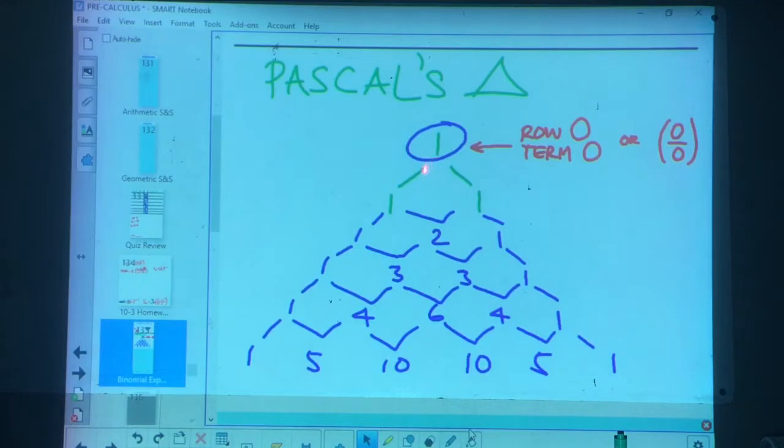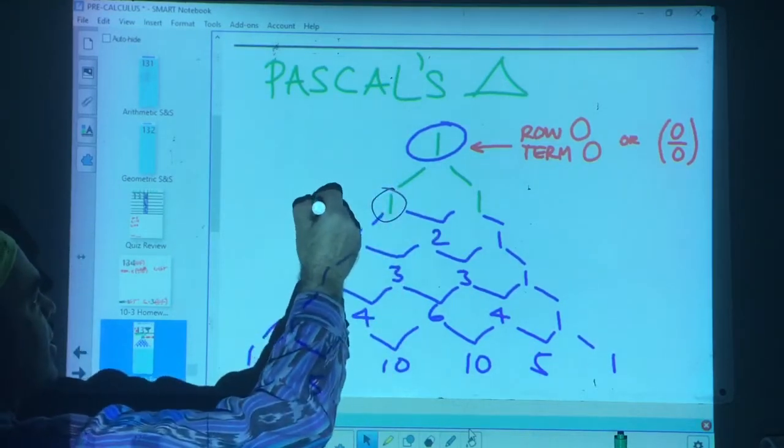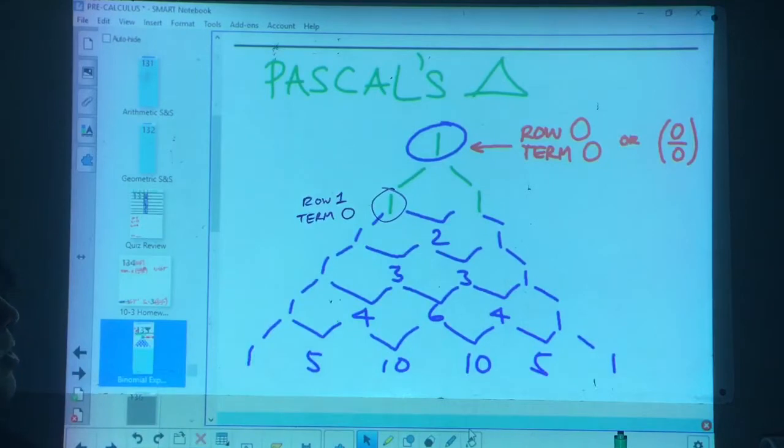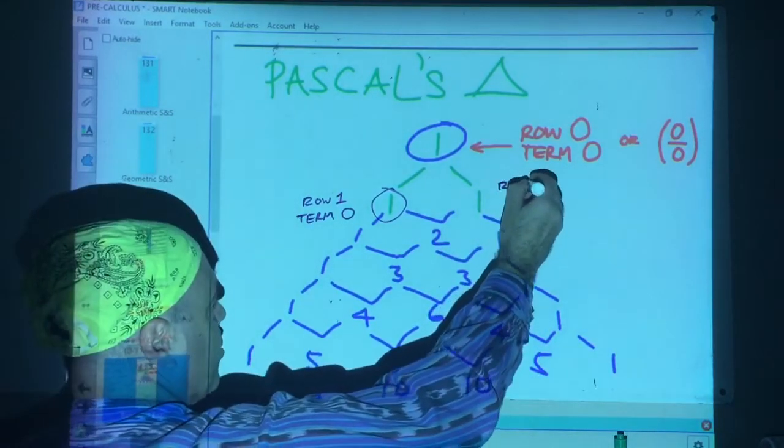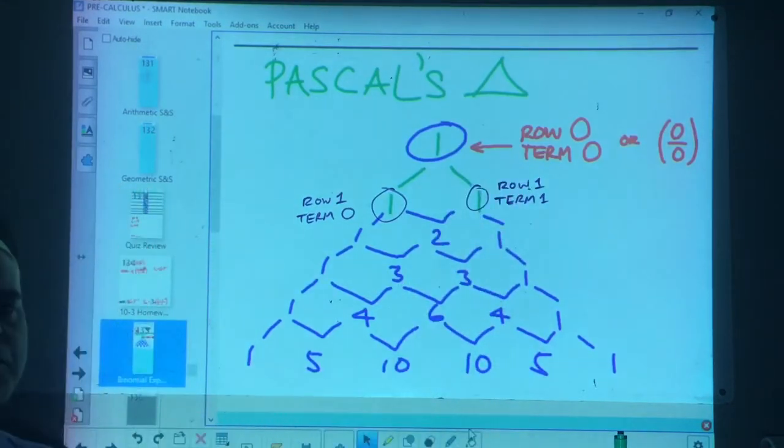But we got to talk about terminology here. We begin not with row one, term one, but with row zero, term zero. Works for me. You'll see it written like this as well. So in reality, what we think of maybe as the second row is really what? Row one. And this guy in particular is row one, term zero, and row one, term one. So you're going to have to get used to the fact that they don't start with ones - they start with zeros.